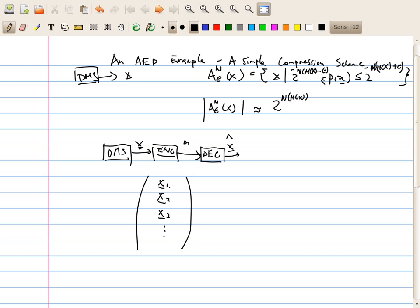And how many typical sequences are there? There will be 2 to the n H(x) of that. So, this index will go up to 2 to the n H(x). So, to encode basically,